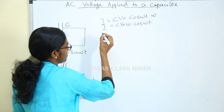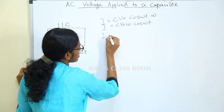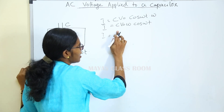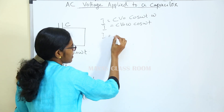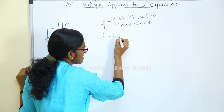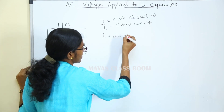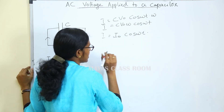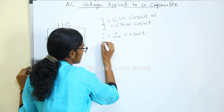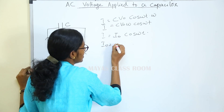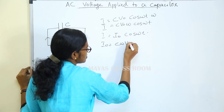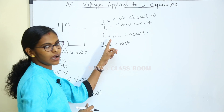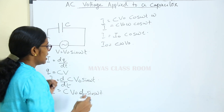So I is equal to Cω V0 cos(ωt), that is I0 cos(ωt). I0 equals CωV0, and I0 is the peak value — the maximum value of the current.